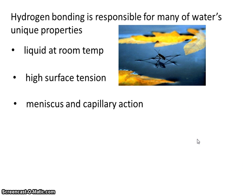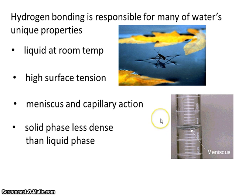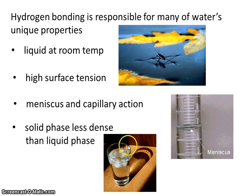Hydrogen bonding is also responsible for water's meniscus and capillary action — you can see the meniscus shape here. Additionally, hydrogen bonding is why the solid phase of water, called ice, is less dense than the liquid phase. That's why ice floats, as shown in the example here.